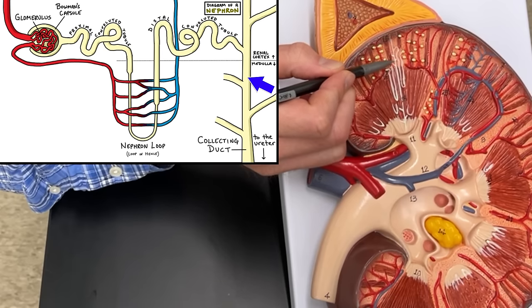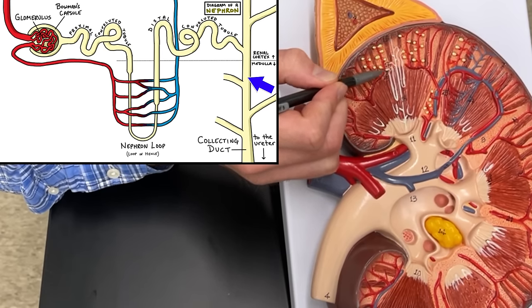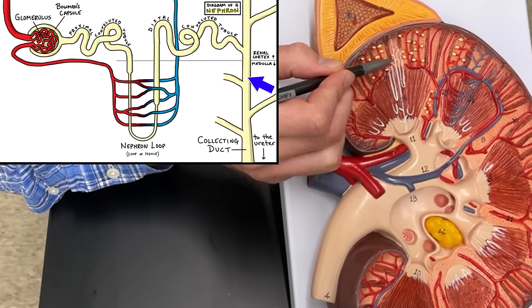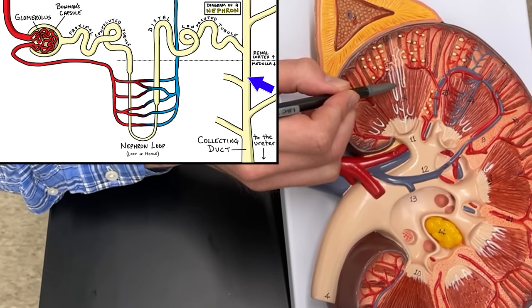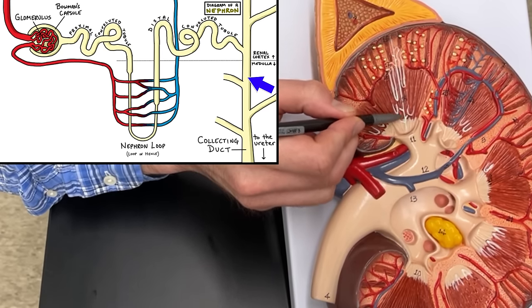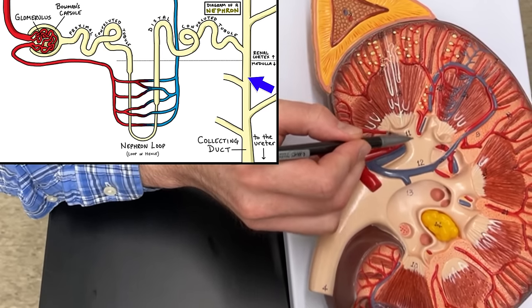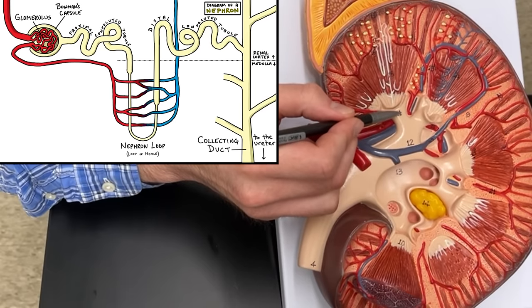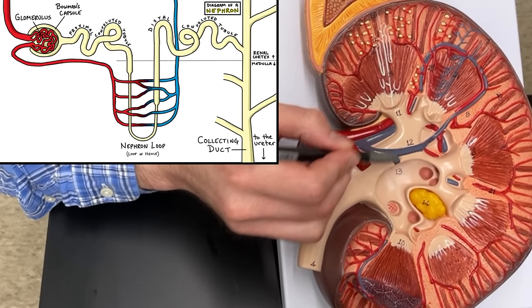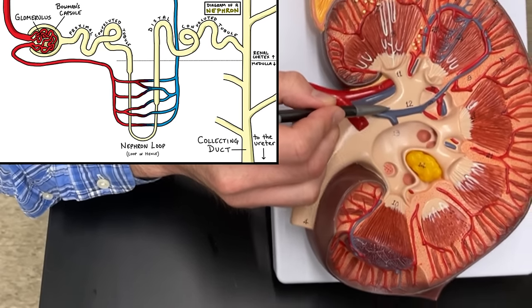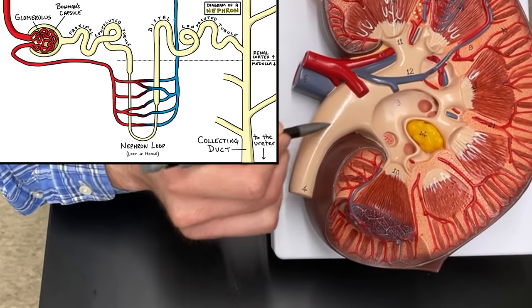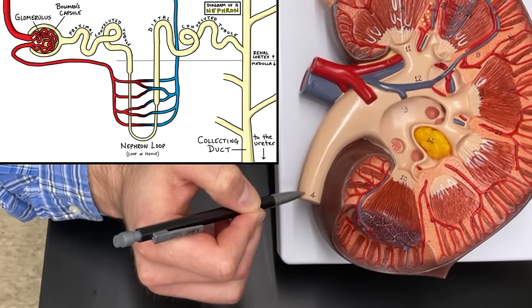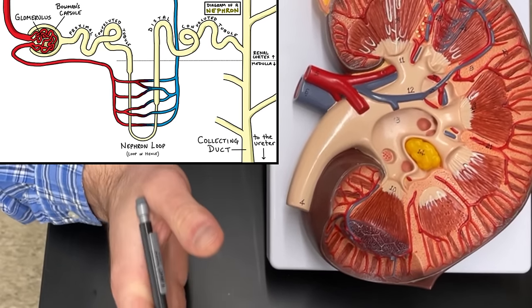That collecting duct is going to take the urine that gets filtered out of the blood. It's going to take it down to the bottom, enter into the calyx, then to the major calyx, and it'll travel down through the ureters to get down to the bladder.